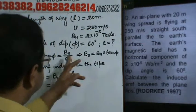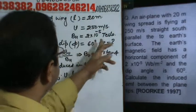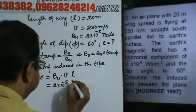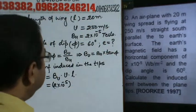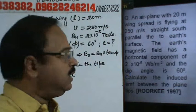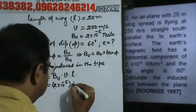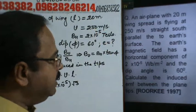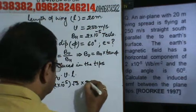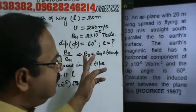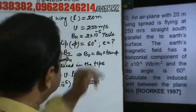Now, Bv is equal to Bh tan phi. Bh is 2 into 10 to the power minus 5 Tesla. Tan phi, tan 60 degrees is root 3. The velocity is 250 meters per second, and l is 20 meters.